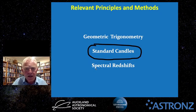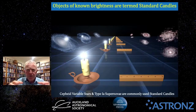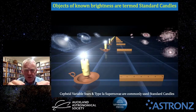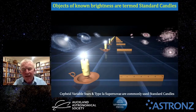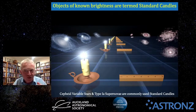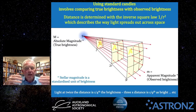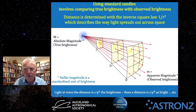Standard candles refers to objects whose brightness you already know — what's called the absolute brightness or absolute luminosity — how bright they really are, compared with the apparent brightness, which is how bright they appear through our telescopes at some distance. The two most common standard candles used by astronomers are Cepheid variable stars and Type 1a supernovae.